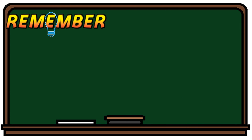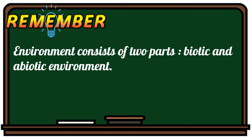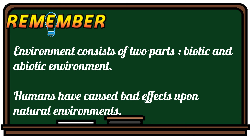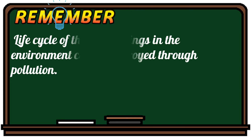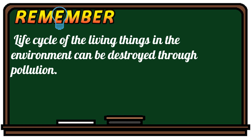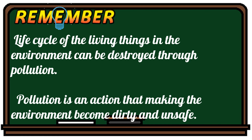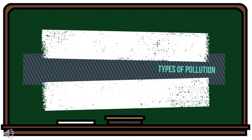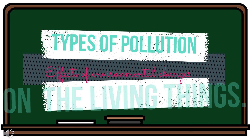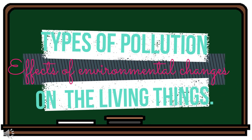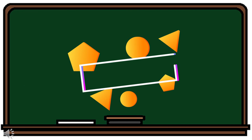Class, remember the following: the environment consists of two parts — the biotic and abiotic environment. Humans have caused bad effects upon natural environments. The life cycle of living things in the environment can be destroyed through pollution. Pollution is an action that makes the environment become dirty and unsafe. Now class, after learning the different types of pollution and the effects of environmental changes on living things, let's have your learning activity.